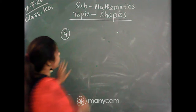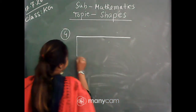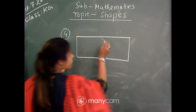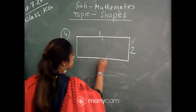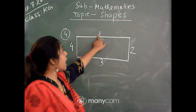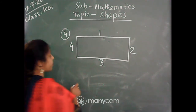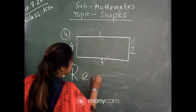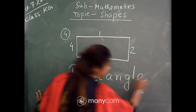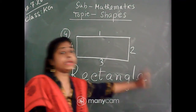Number 4, and the last shape of today's class is rectangle. That is rectangle — rectangle. It has 4 sides: 1, 2, 3, and 4. This is rectangle, and the spelling of rectangle is R-E-C-T-A-N-G-L-E. Rectangle — R-E-C-T-A-N-G-L-E.